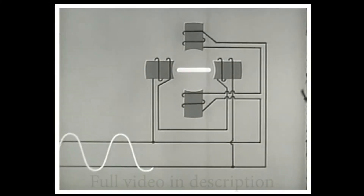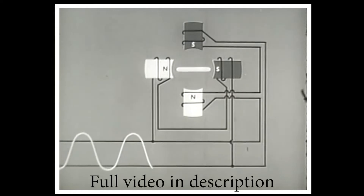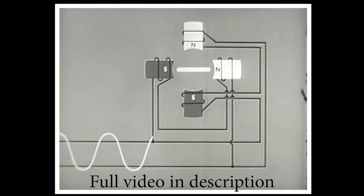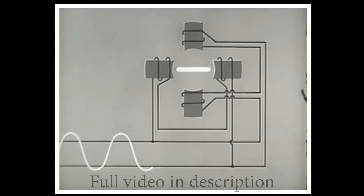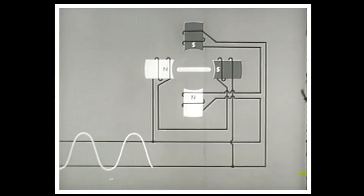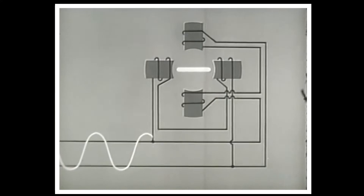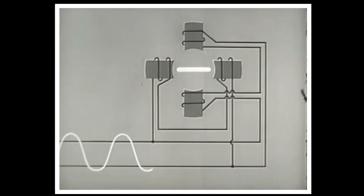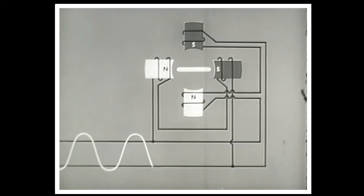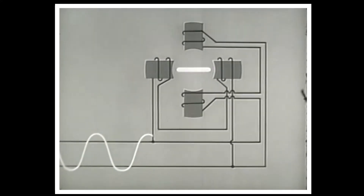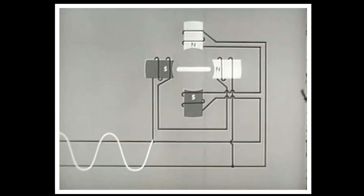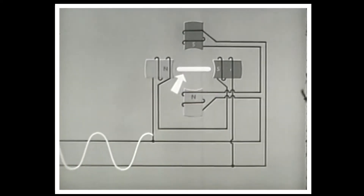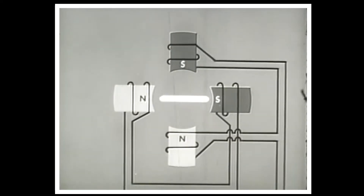The field will not rotate. As the cycle of the AC wave changes, the poles pulsate alternately. But since there is no relative motion, the rotor will not turn.